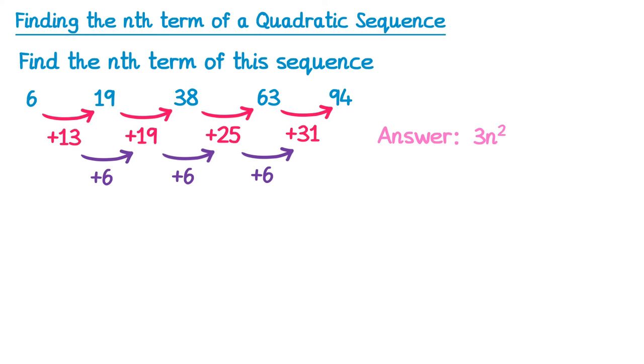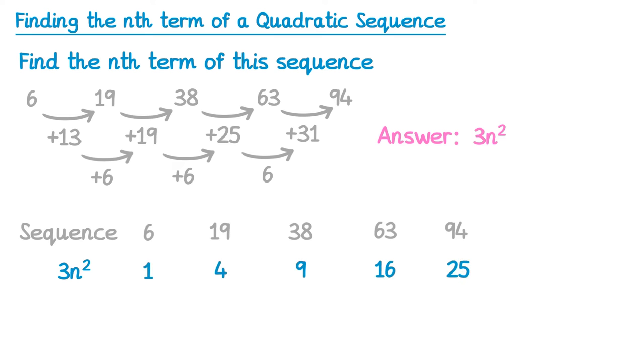What we do next is write another copy of the sequence down, like this. Then underneath this, we write the part of the answer that we know, so 3n squared. We then generate terms for 3n squared. To do this, I first write down the square numbers, so 1, 4, 9, 16, 25, and so on, and then just times them all by 3.